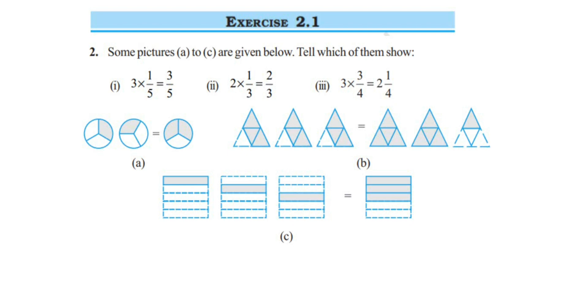Hello everyone, here is a question from Exercise 2.1, Question 2, similar to the first question. The chapter is Fractions and Decimals of Class 7. The question is: some pictures (a) to (c) are given below. Tell which of them shows the given fractions. We have three fractions given to us and they have given the pictures.